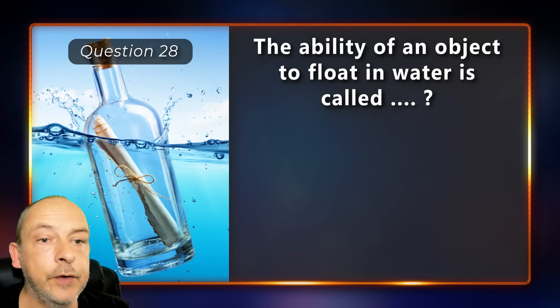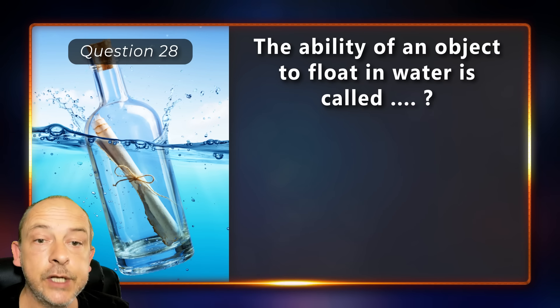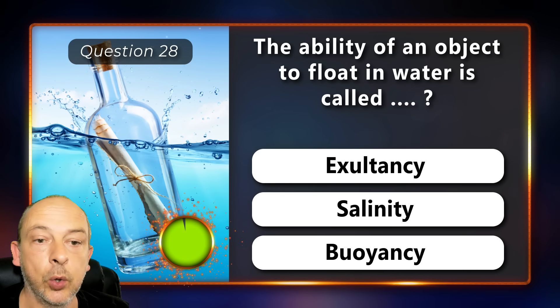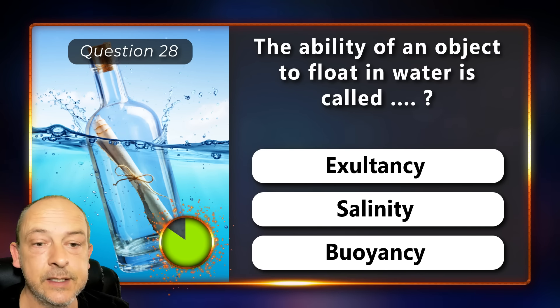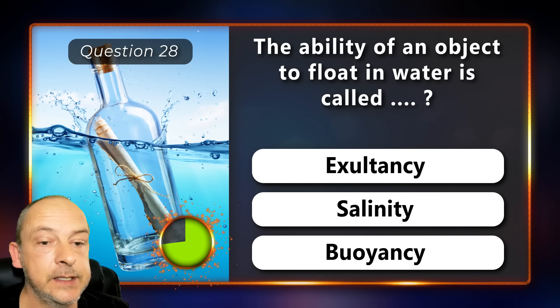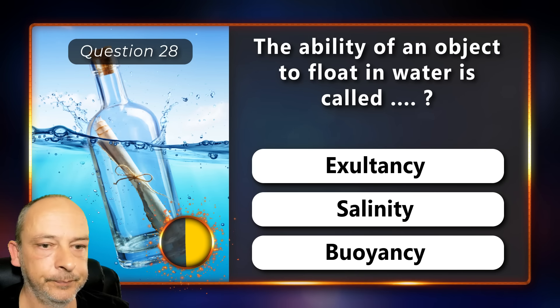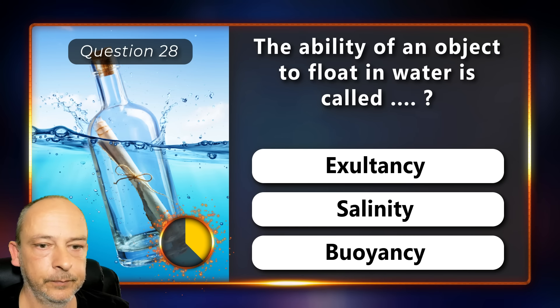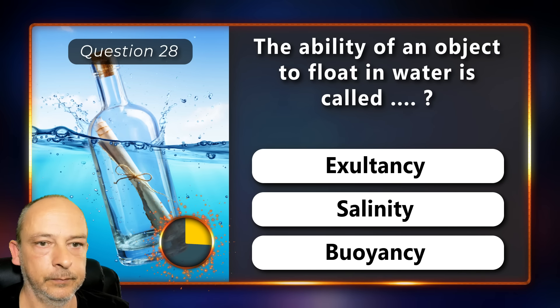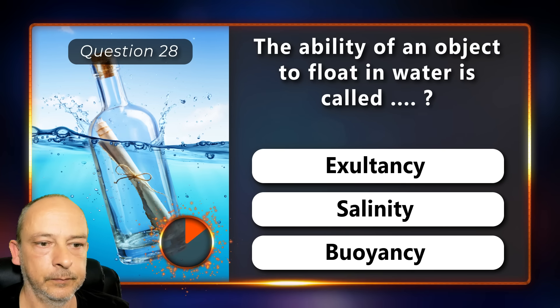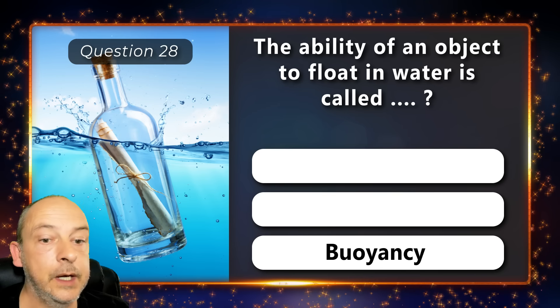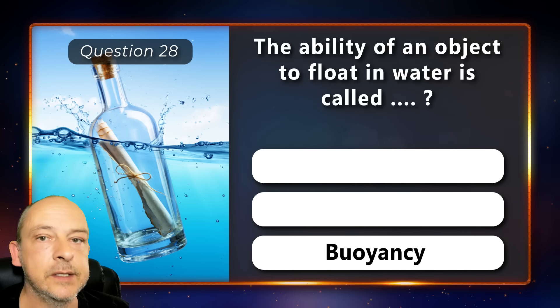The ability of an object to float in water is called exultancy, salinity, or buoyancy? It's called buoyancy.